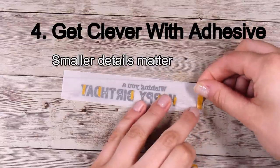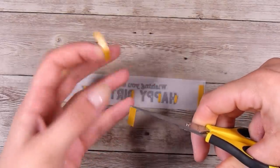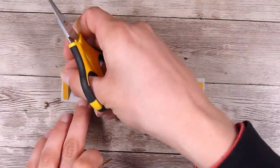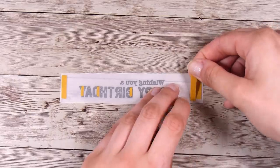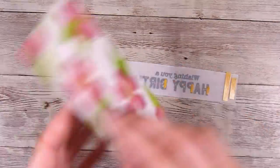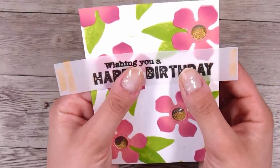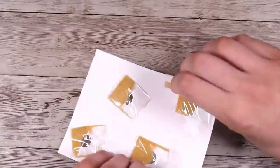So whilst I've been talking here, I have stamped out my sentiment and I heat embossed it. So my fourth tip here is get clever with adhesive. Small details matter in card making. And it's the little things about buckling vellum and that don't look nice and neat on your card. So you can see I've got all those tiny wee pieces there behind the letters and it is worth doing that to stop any of the buckling that we would otherwise get.